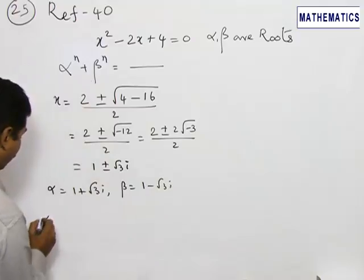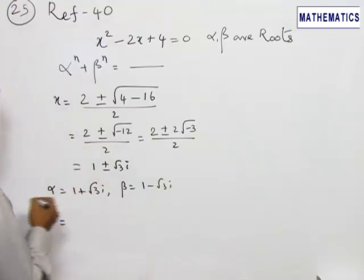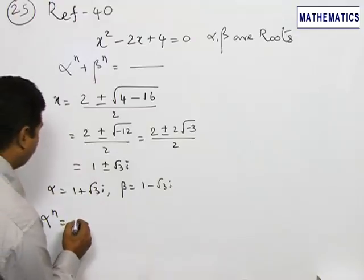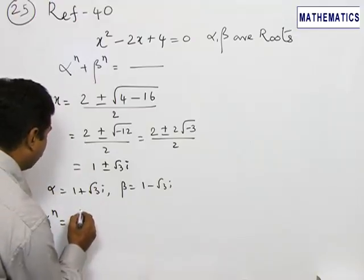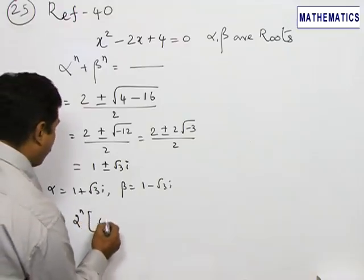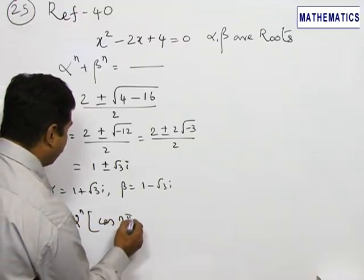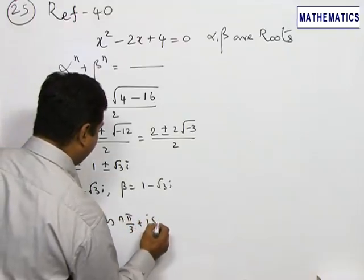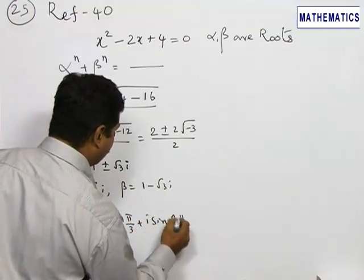For α^n, when we put them in the modulus and amplitude form, this will be 2^n into cos(nπ/3) + i sin(nπ/3).